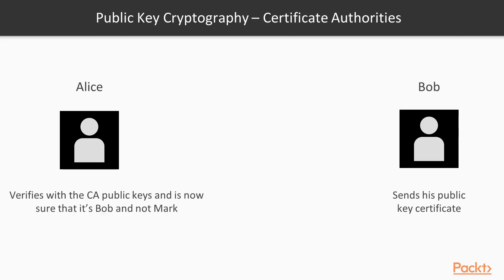To prevent this, we use certificate authorities. Certificate authorities are trusted third parties that provide Bob with a public key certificate. When Bob sends his public key certificate to Alice, Alice can verify with the certificate authority's certificate that Bob's public key certificate was valid. After that, Alice will be sure that Bob is Bob and not Mark. Certificate authority certificates are distributed with operating systems or browsers, so Alice has the certificate authority certificate on her own machine.